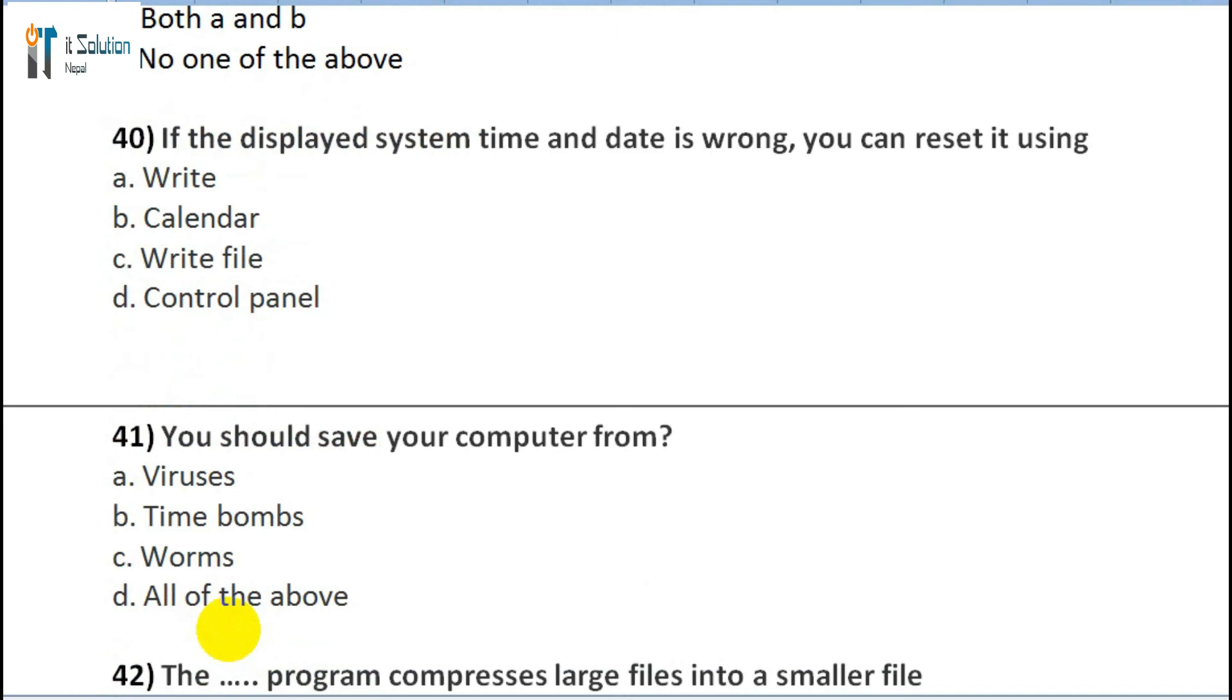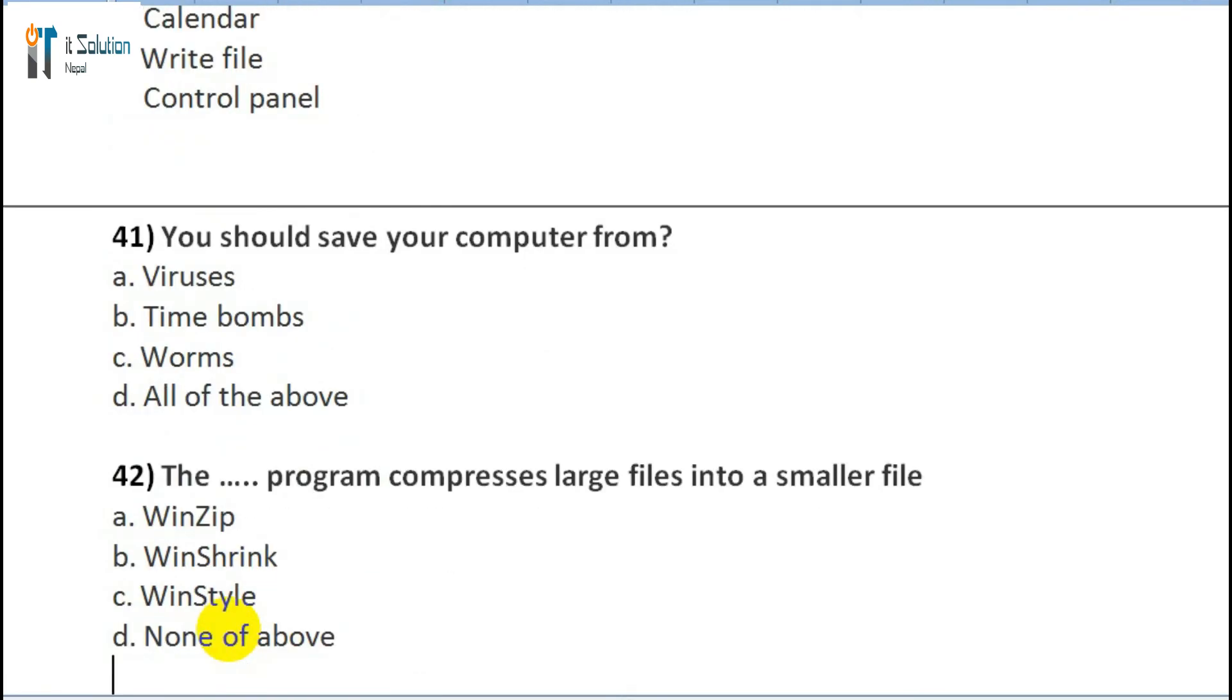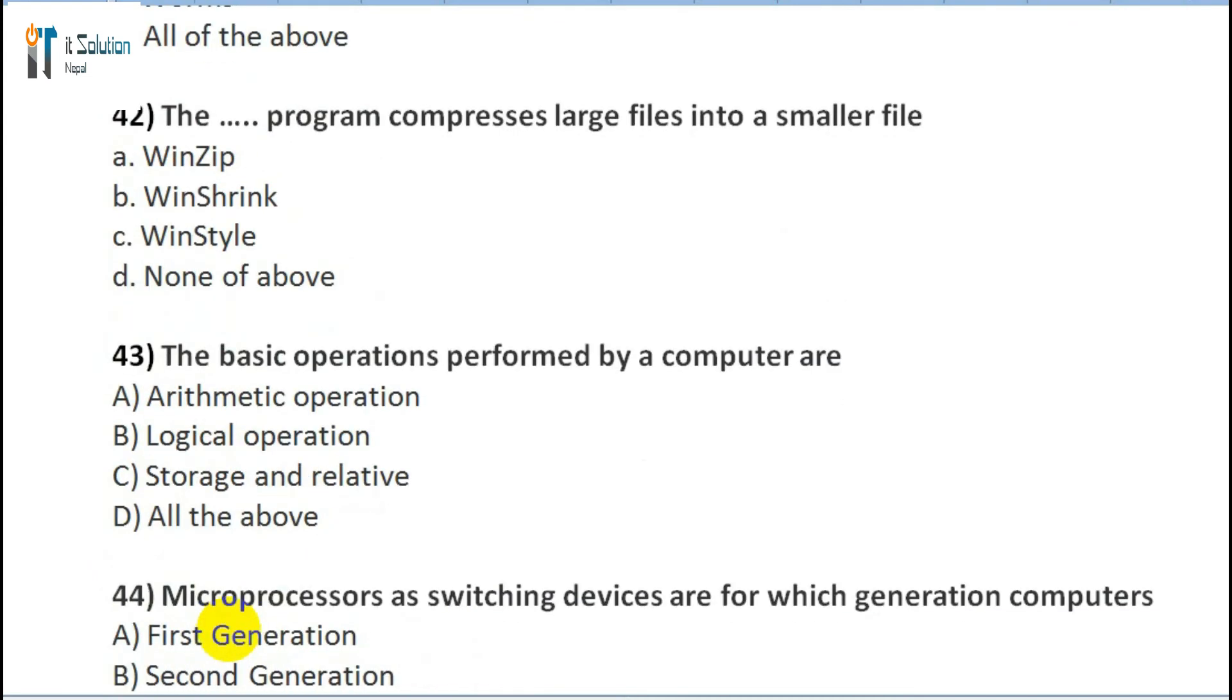Question 41: You should save your computer from: A) Virus, B) Time bombs, C) Worms, D) All of the above. Question 42: The data program that compresses large files into smaller files: A) WinZip, B) WinStretch, C) WinStyle, D) None of the above. Question 43: The basic operations performed by a computer are: A) Arithmetic operation, B) Logical operation, C) Storage and retrieval, D) All of the above.